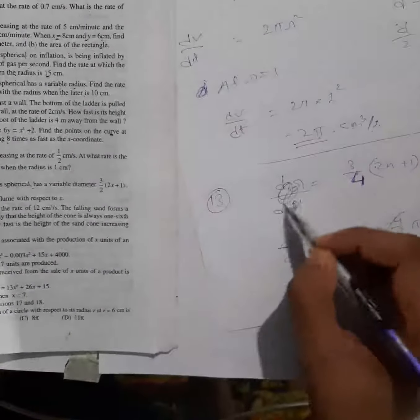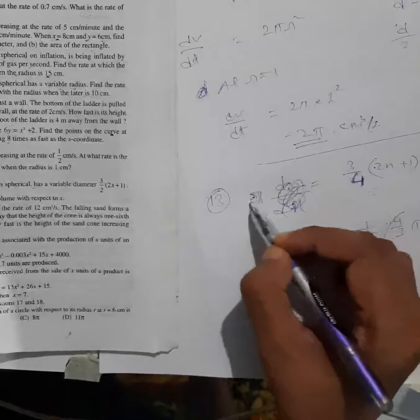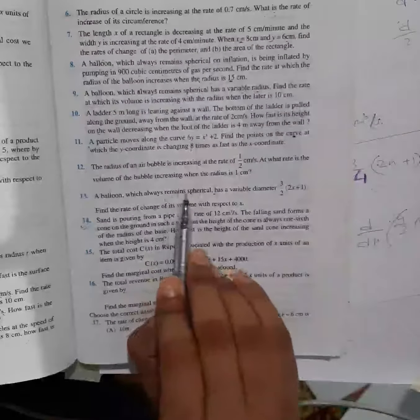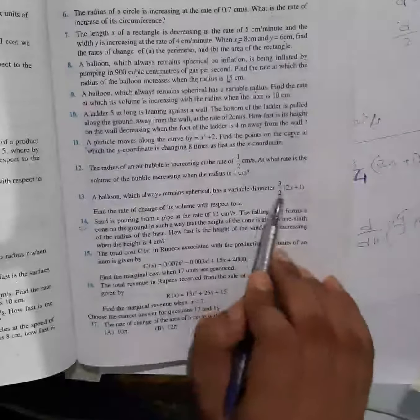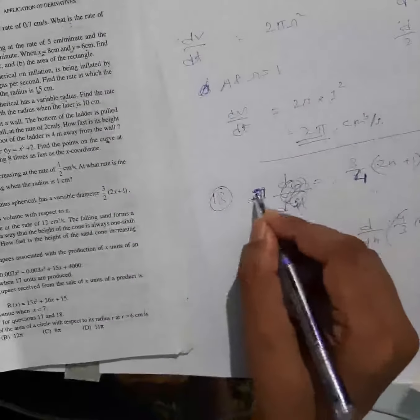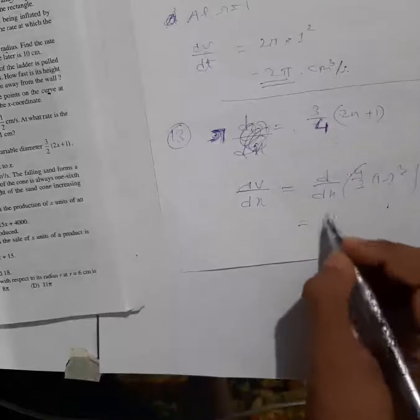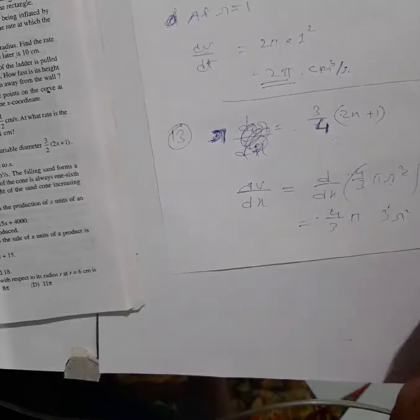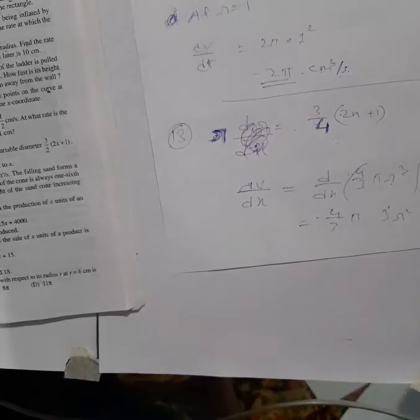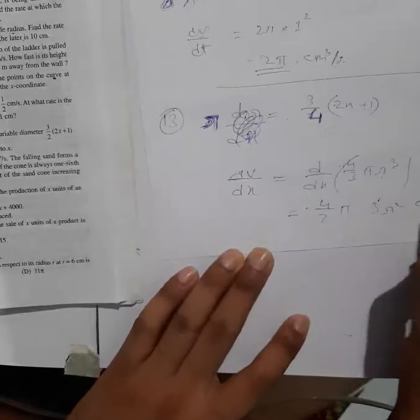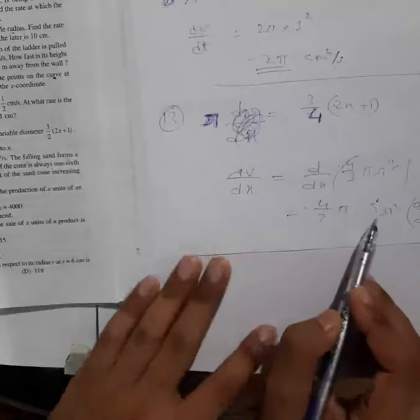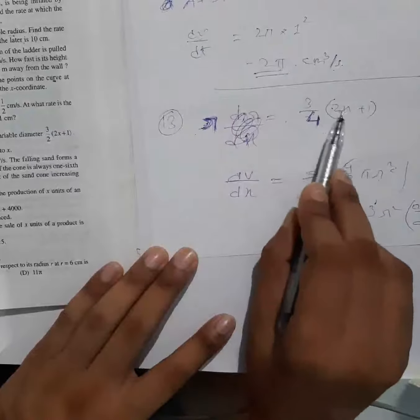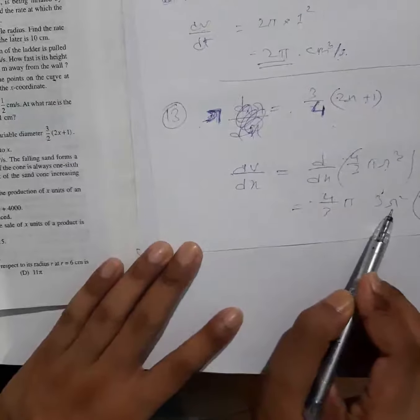To clarify: this is the diameter expression, not the radius directly. The balloon has a variable diameter, so the radius is derived from it. Differentiating V = (4/3)πr³ gives dV/dx = (4/3)π · 3r² · dr/dx, where r = (3/4)(2x+1).